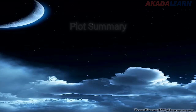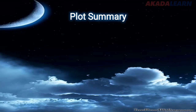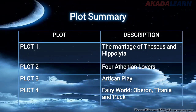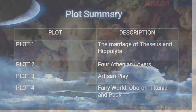Now the plot summary — I'm going to give you a summary of what the plot looks like. Look at the table here. Plot one is the marriage of Theseus and Hippolyta. Plot two is the four Athenian lovers. Plot three is the artisan play. And plot four is the fairy world, where we have Oberon, Titania, and Puck.